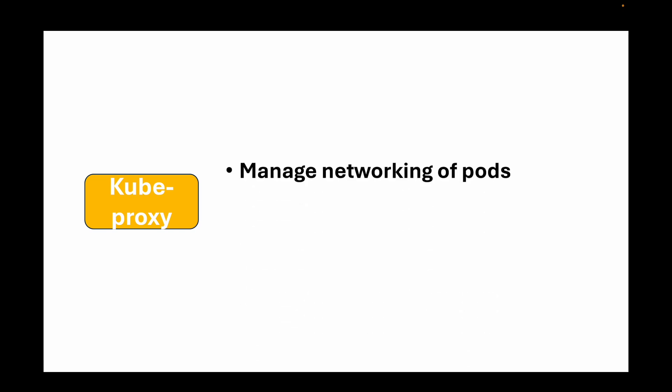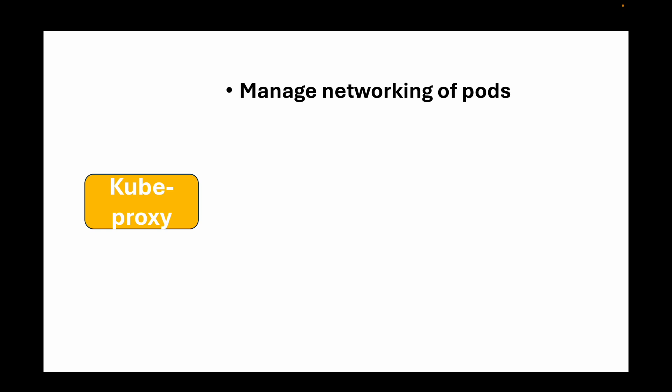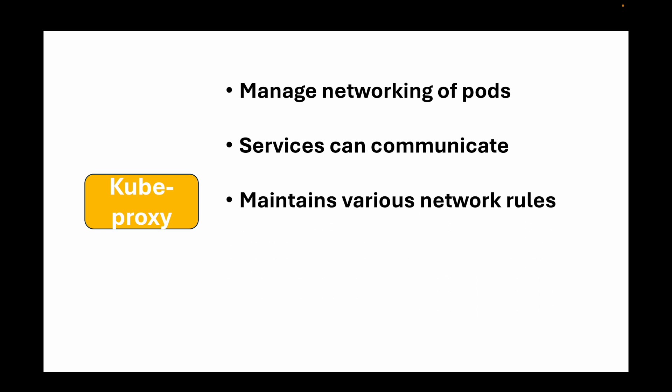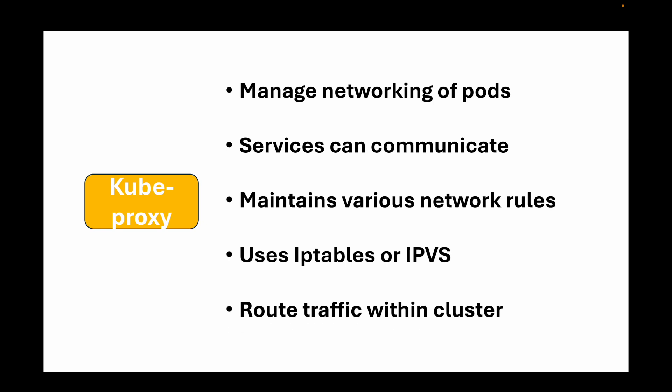The next component is kube-proxy, the networking component of your worker nodes. Kube-proxy manages the networking of your pods, ensuring all services can communicate with each other by maintaining various network rules. It makes use of iptables or IPVS to route traffic within the cluster. For example, when a front-end pod needs to communicate with a back-end service, kube-proxy ensures the request reaches the correct pod and handles proper traffic routing.